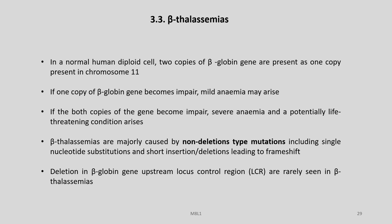Let us now have a look at the beta thalassemias. In a normal human diploid cell, two copies of beta-globin gene are present as one copy on chromosome 11. If one copy becomes impaired, mild anemia may arise; if both copies become impaired, severe and potentially life-threatening anemia arises. Beta thalassemias are majorly caused by non-deletion type mutations including single nucleotide substitutions and short insertion-deletions leading to frameshift. Deletions in the beta-globin gene cluster upstream locus control region are rarely seen.